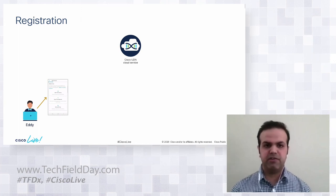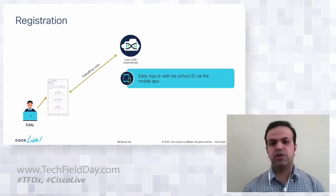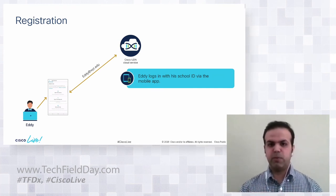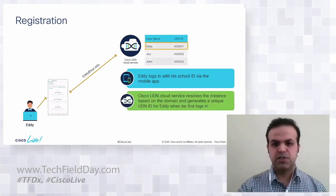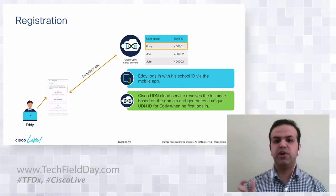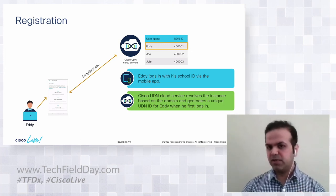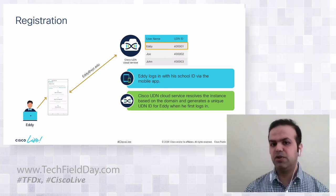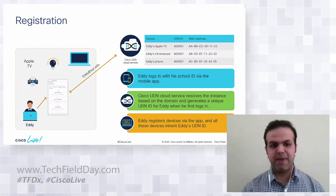When I registered these devices, I logged into the mobile app, the request went to the UDN Cloud Service, and it resolved — based on the domain I logged in from — the exact DNA Center and ISE instance to connect to. It assigned me a unique UDN ID. As I kept registering other devices, they all got the same UDN ID. Other people registering with different domain credentials get their own separate UDN IDs. So my Apple TV, Chromecast, and phone all share a single unique UDN ID but have different MAC addresses.